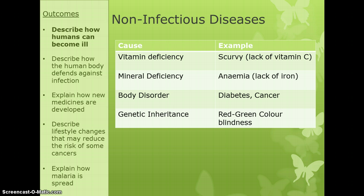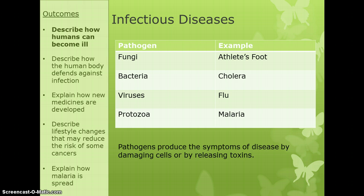Non-infectious diseases are ones you can't catch from other people — you won't catch cancer from someone in the same room. Infectious diseases, on the other hand, are caused by pathogens that carry illness into your body. The first type is fungi — an example is athlete's foot. Bacterial infections include cholera, which the exam board particularly likes. Viral infections are caused by viruses — a good example is the flu. There are also diseases caused by protozoa, which are microscopic creatures — a good example is malaria. Malaria is carried by mosquitoes, but the illness is caused by the protozoa carried by the mosquitoes.